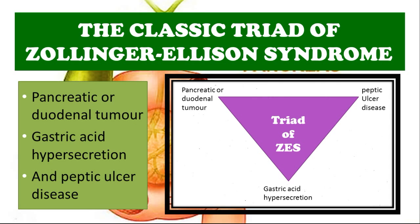The classical triad of Zollinger-Ellison syndrome consists of: a pancreatic or duodenal tumor, which leads to gastric acid hypersecretion, because these tumors produce gastrin which promotes the stomach to produce a lot of acid. This extremely acidic environment erodes away the lining of the stomach, leading to the development of peptic ulcer disease. So this is the classic triad of Zollinger-Ellison syndrome.